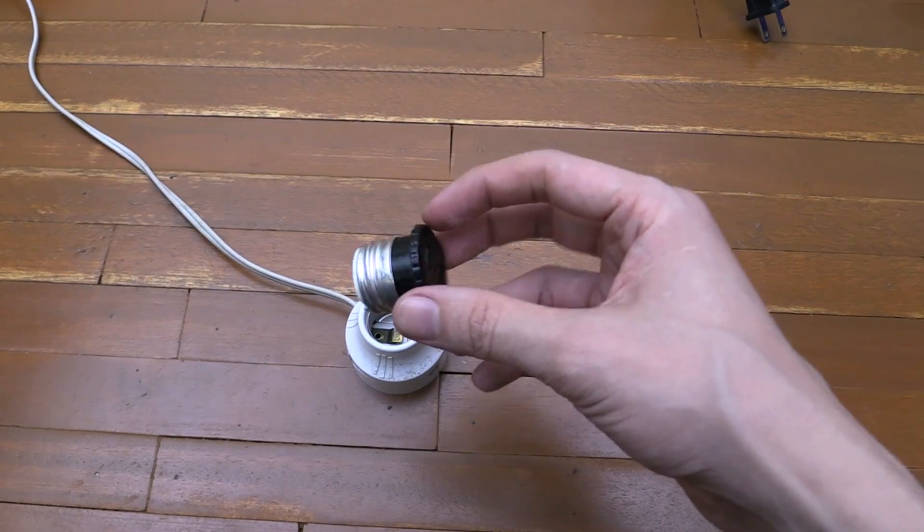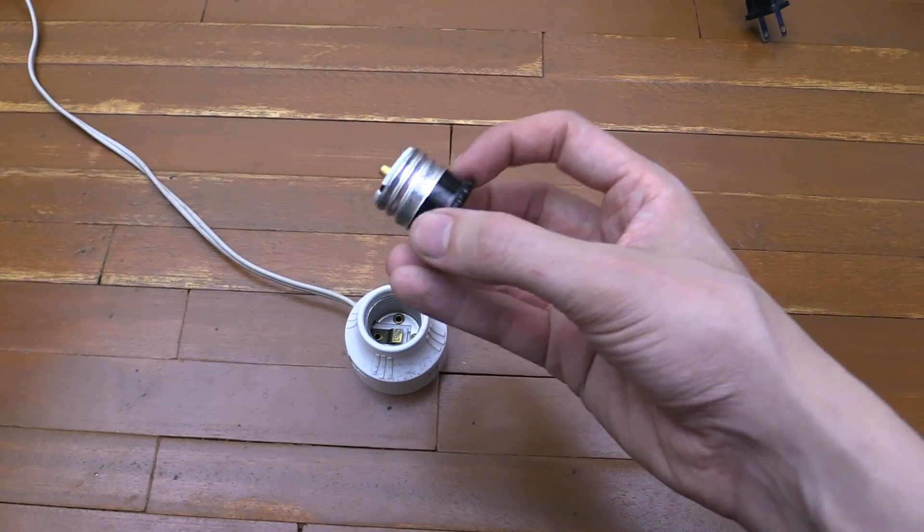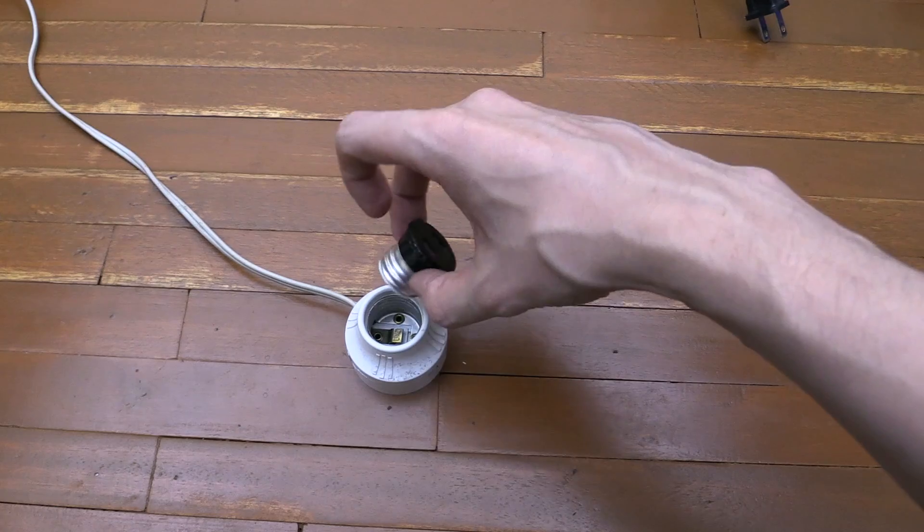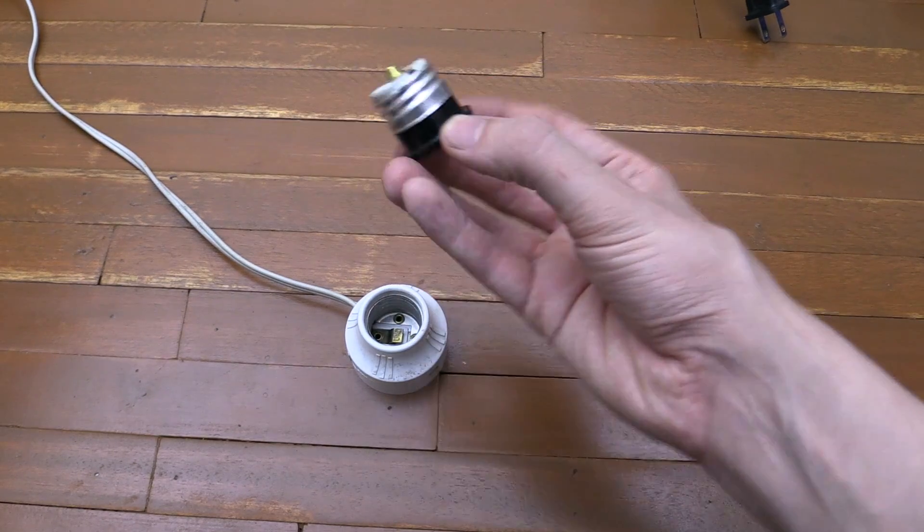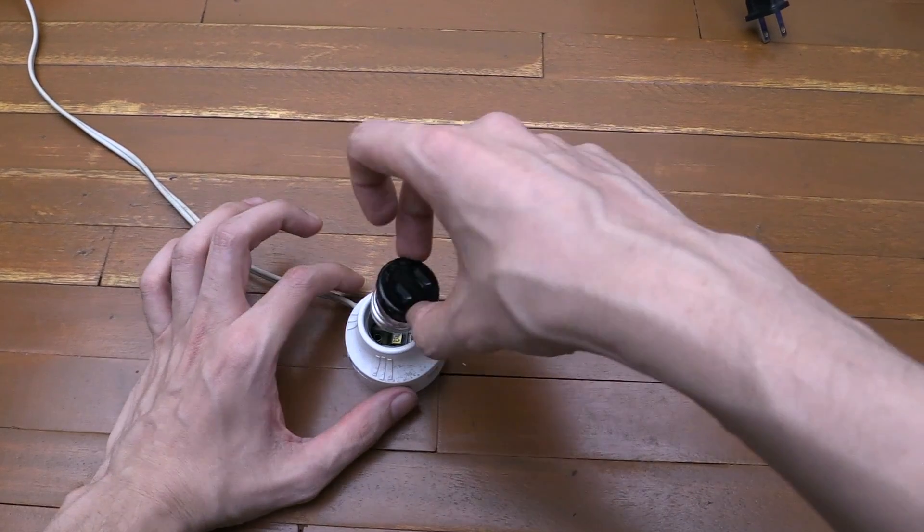So let's start with this one here which is the simplest. Now there is a possibility of shock if you're holding the metal while you screw this in. So you have to be very careful not to touch the metal and of course turn off the switch at the wall.